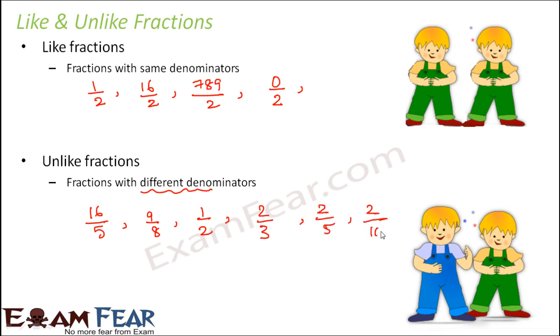2 by 3, 2 by 5, 2 by 10. Even though they have the same numerator, but since they have different denominators, so they are unlike fractions. So like and unlike fractions are only based on the denominator. So we don't care what the numerator is. We just check whether the denominators are same or not.